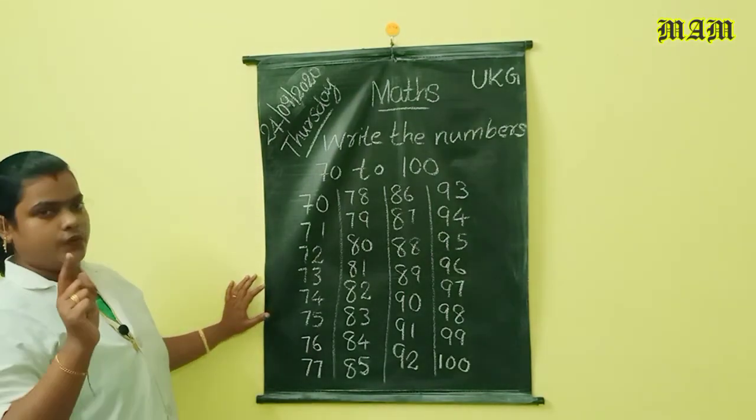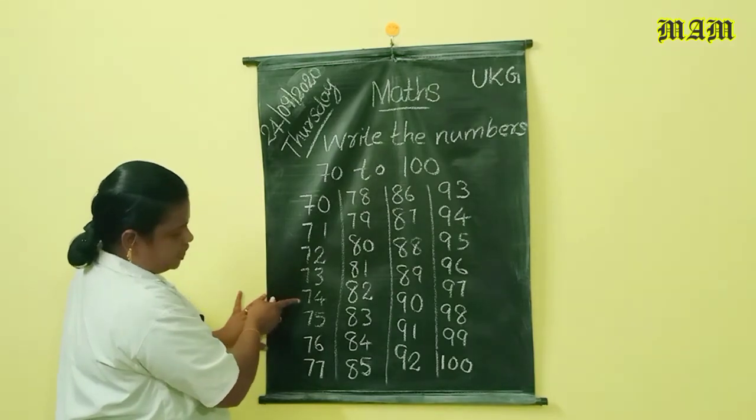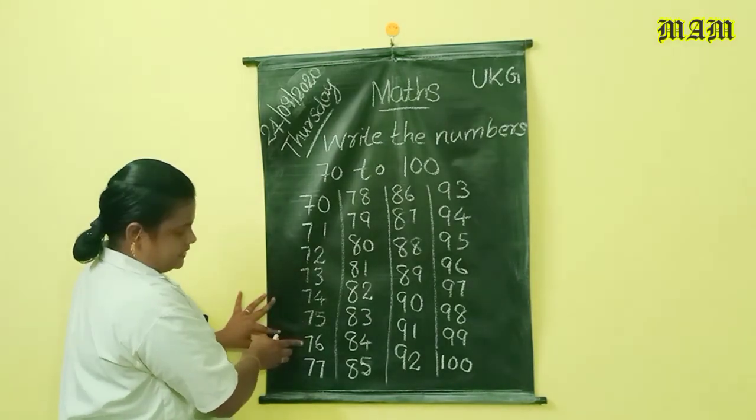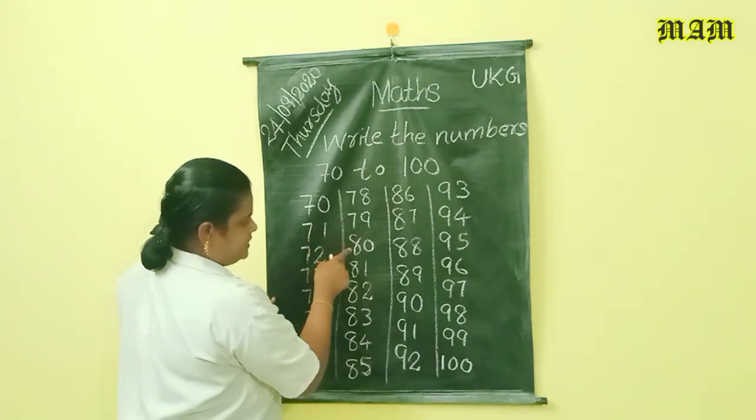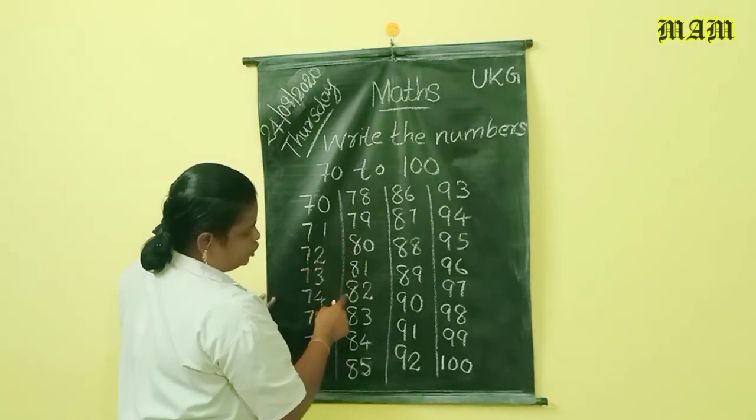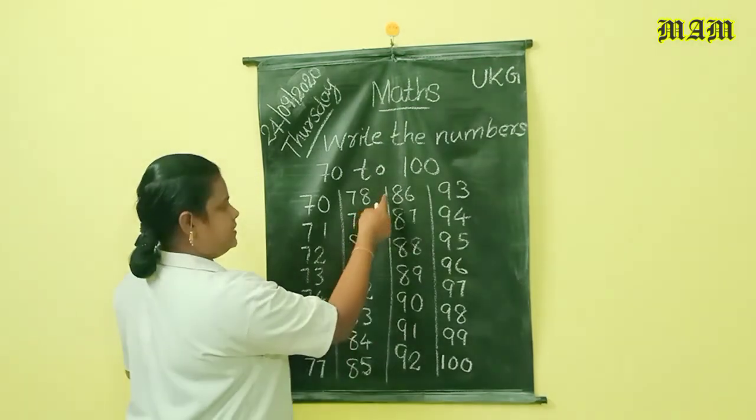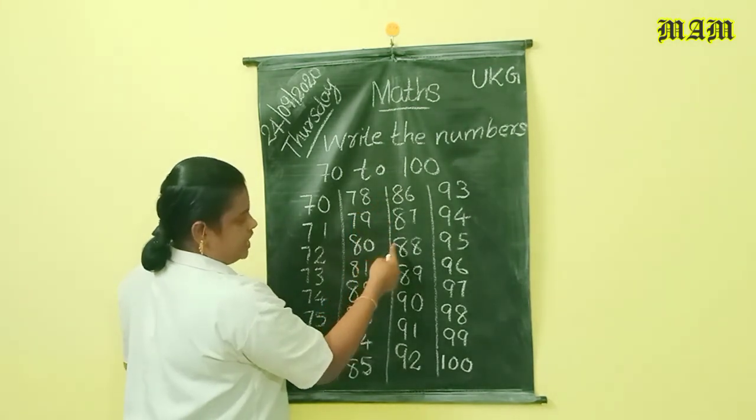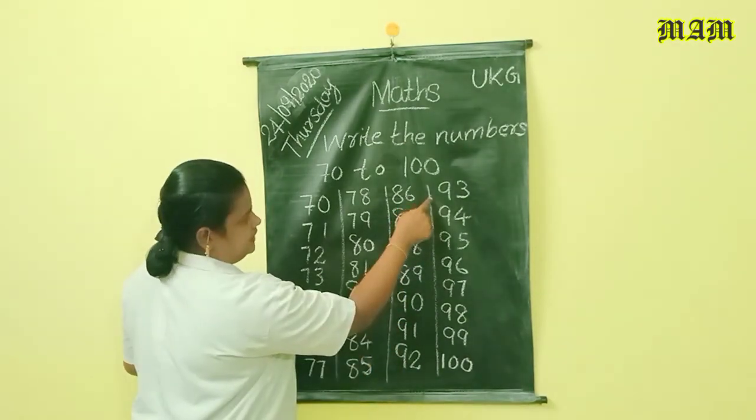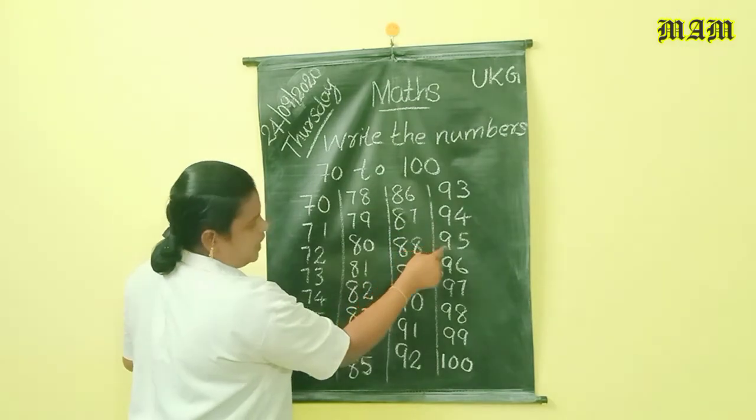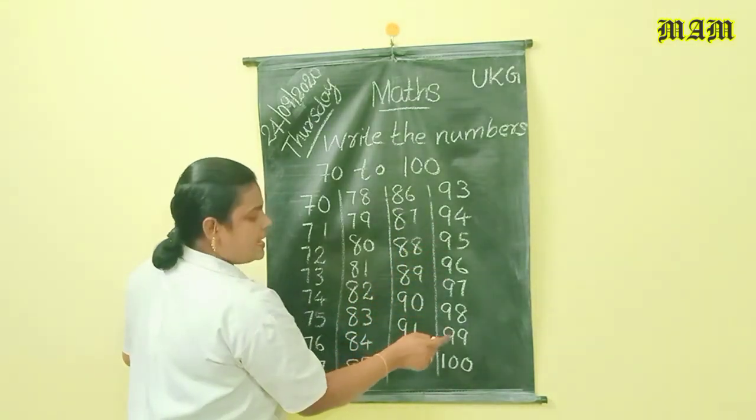Once more: seventy, seventy-one, seventy-two, seventy-three, seventy-four, seventy-five, seventy-six, seventy-seven, seventy-eight, seventy-nine, eighty, eighty-one, eighty-two, eighty-three, eighty-four, eighty-five, eighty-six, eighty-seven, eighty-eight, eighty-nine, ninety, ninety-one, ninety-two, ninety-three, ninety-four, ninety-five, ninety-six, ninety-seven, ninety-eight, ninety-nine, one hundred.